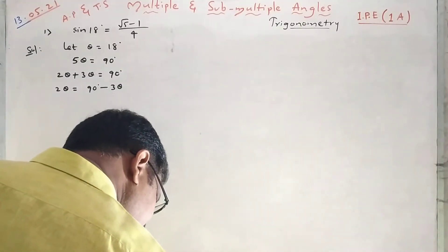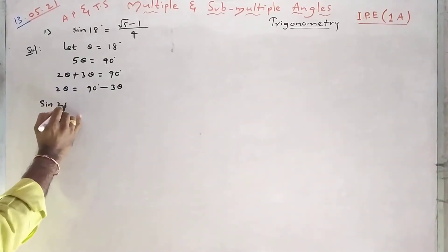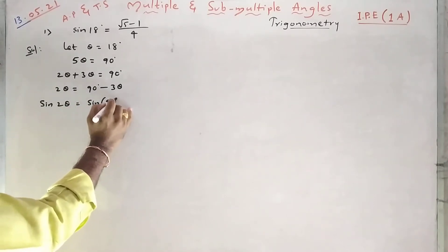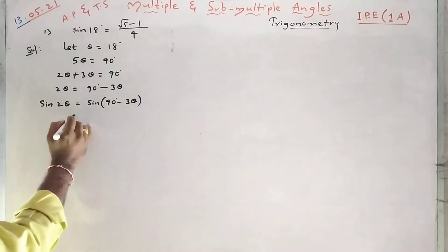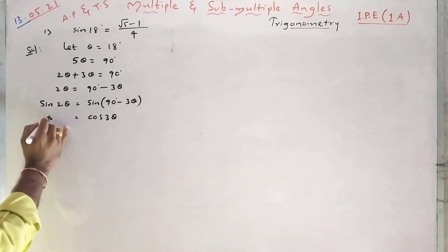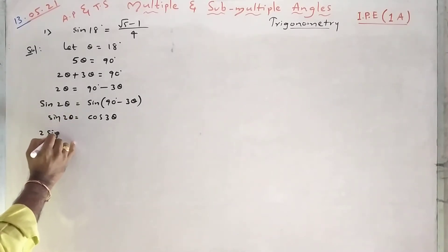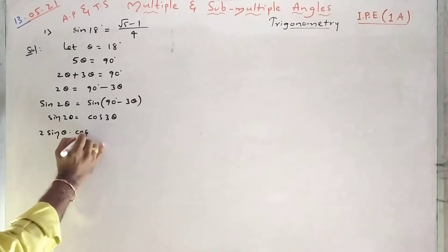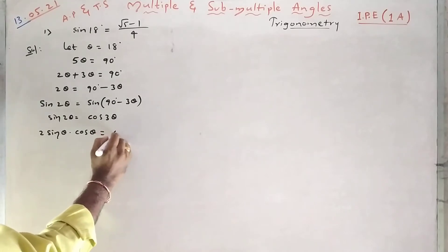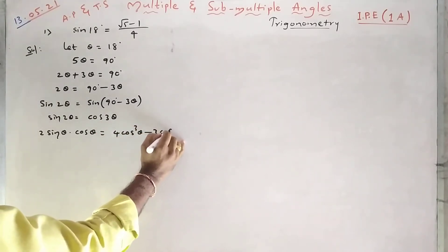Now I will take sine on both sides. Sin 2 theta equals sin(90 minus 3 theta), which we know is cos 3 theta. Sin 2 theta is nothing but 2 sin theta cos theta, and cos 3 theta is 4 cos³ theta minus 3 cos theta.